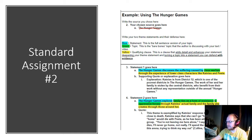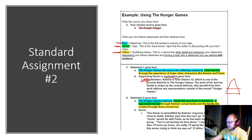Similar to the last assignment, I'll give you some color-coded walkthroughs. Blue is going to be the statement, green is going to be the topic, and yellow is going to be that qualifying clause or sentence enhancer. The statement was 'The Hunger Games discusses the suffering caused by class warfare,' and then my qualifying statement was 'through the experience of lower class characters like Katniss and Peeta.' For the supporting explanation: Katniss is from District 12, one of the poorest districts. The work of her and her family is stolen by the central districts who benefit from their work without any representation outside of the annual Hunger Games — that's the class warfare.